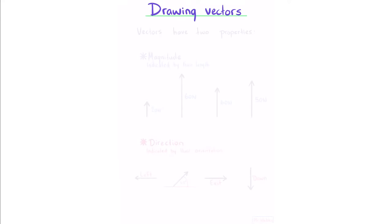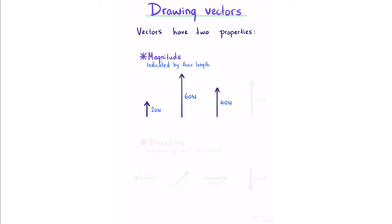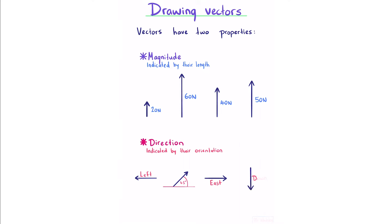Drawing vectors. Vectors have two properties: magnitude, which is indicated by their length — the longer the vector, the higher the magnitude — and direction, which is indicated by their orientation. We can describe direction in many ways: left or right, as an angle, as north, south, east or west, and also up or down.